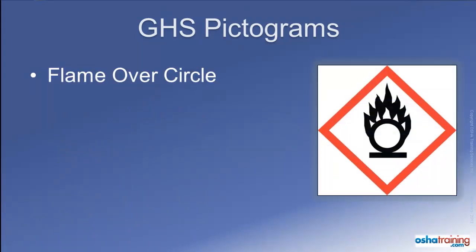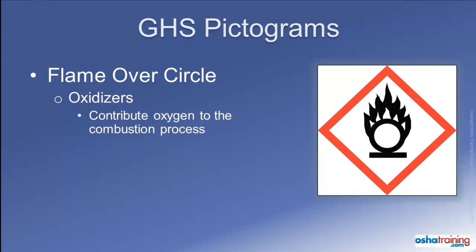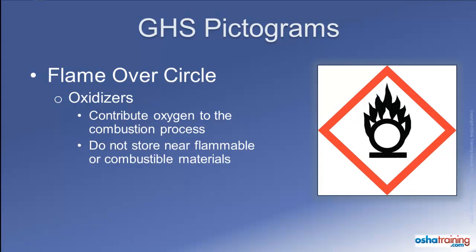The pictogram of a flame over a circle identifies materials classified as oxidizers. While similar in appearance to the flame pictogram, oxidizers are materials that cause or contribute more oxygen to the combustion process, making other materials burn much more rapidly than they normally would. Care must be taken to avoid storing these products near flammable and combustible materials.